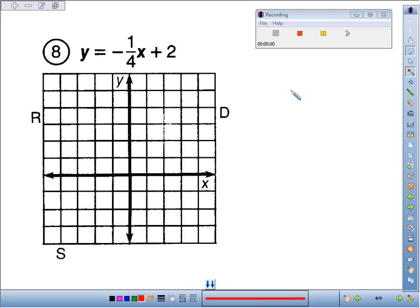Number eight, we're supposed to graph the equation y equals negative 1/4x plus 2. It's already in slope-intercept form, y equals mx plus b. If we identify our slope and our y-intercept, we will be able